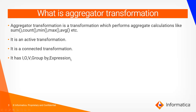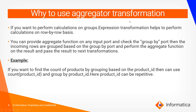Why do you use Aggregate Transformation? If you want to perform calculations on groups — instead of performing on a row-by-row basis like an Expression transformation — you need Aggregate Transformation. You can provide an aggregate function on any input port and check the group-by port. The incoming rows are grouped based on the group-by port, the aggregate function is performed, and the result is passed to the next transformation.